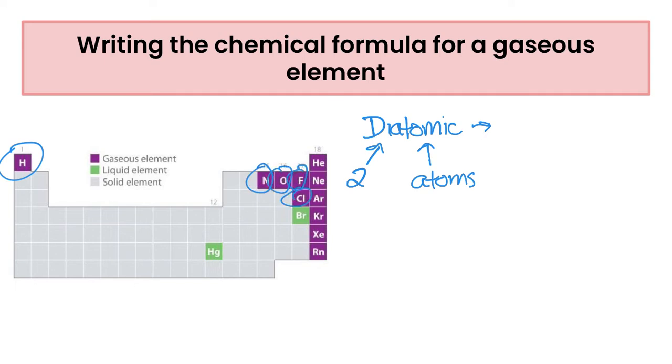So if we were writing the chemical formula for any of those we have to remember that it always has two atoms, so it would be H2 or it would be N2, O2, F2, or Cl2.